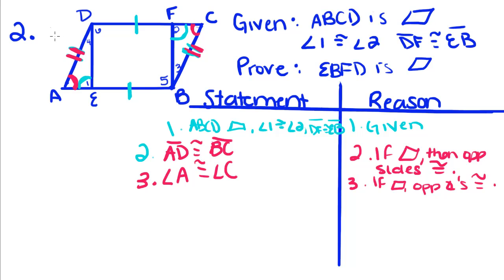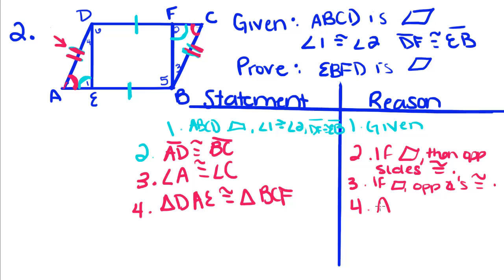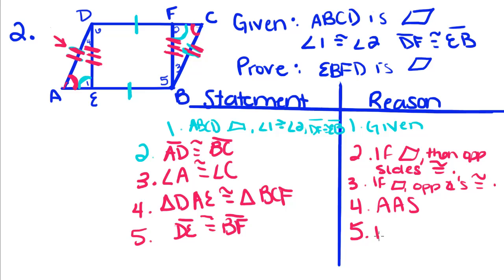Now we have a side congruent, an angle congruent, and an angle congruent, so we can get these two triangles congruent. Triangle DAE is congruent to triangle BCF by angle-angle-side. Then we can get DE congruent to BF, because if triangles are congruent, their corresponding parts are also congruent.